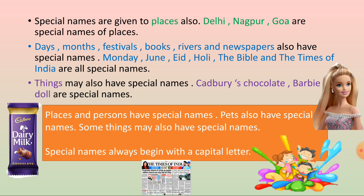Places and persons have special names. Pets also have special names, and some things may also have special names. One important rule: special names always begin with a capital letter. Just remember that special names always begin with a capital letter. Do practice properly, read the chapter, and learn all the hard words. Thank you.